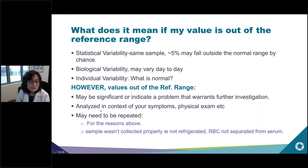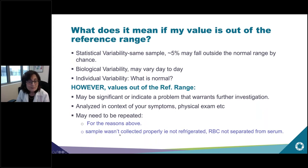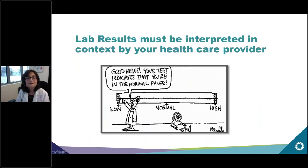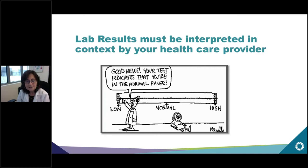These values have to be analyzed in the context of your symptoms and physical exam. Usually the first course of action for an abnormal lab is to repeat it — it may have fallen outside the normal range by chance, the sample may not have been collected properly, not refrigerated, or not separated properly. Lab results have to be interpreted in context by your healthcare provider.